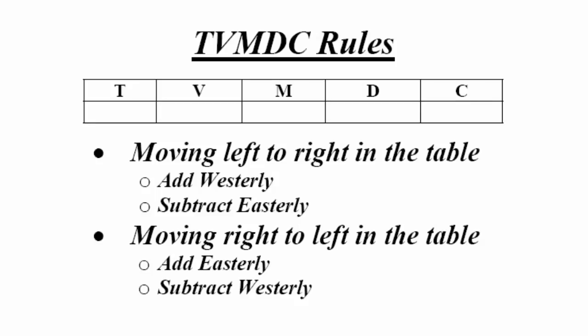When using the TVMDC table to convert between true, magnetic, and compass, use the following rules for adding or subtracting variation and deviation. Moving from left to right in the table, add west or subtract east variation or deviation. Moving from right to left in the table, do the opposite — add east or subtract west variation or deviation.